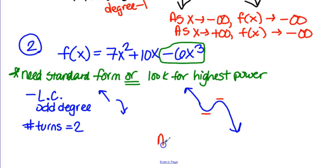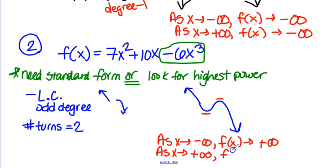Our end behavior, press pause and try the end behavior, and we'll see if you match. As x approaches negative infinity, f(x) approaches positive infinity. So as x goes left forever and ever, the graph is increasing. And then as x approaches positive infinity, so as x goes right, f(x) going to negative infinity. And that completes number 2.